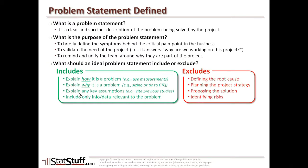There are several things we want to make sure we exclude from every problem statement. First, defining the root cause. The whole point of doing a Lean or Six Sigma project is because we don't know the root cause yet. If we know the root cause, we probably don't even need the define and measure phase — we can jump right to analysis. So keep an open mind and make sure the root cause is not identified within the problem statement itself. Also exclude any project strategy — how you're going to attack the problem. That should be addressed separately.